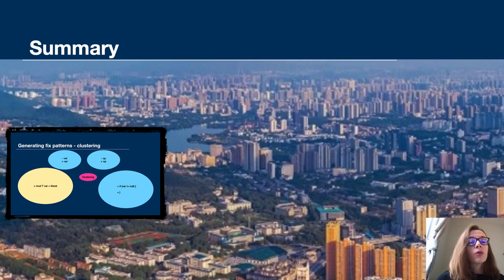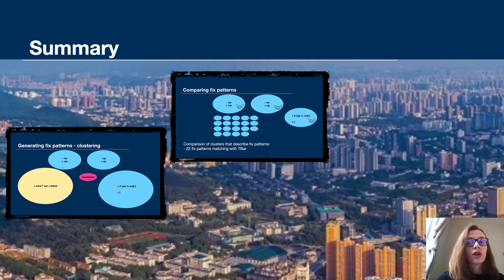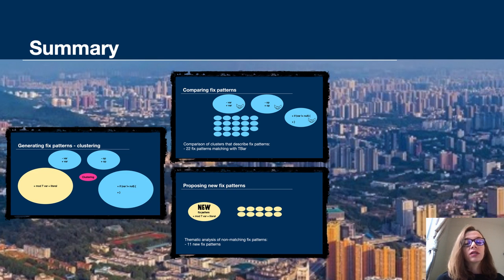And to summarize, in our work we generated fix patterns using similarity between human-written fixes and clustering these fixes using the threshold-based k-means clustering algorithm. We got some clusters that match the baseline, which means that we got some matching fix patterns. We got some clusters that didn't match the baseline, we thematically analyzed them, and we proposed 11 new fix patterns. These new fix patterns will help APR tools to fix a greater range of bugs in the future.